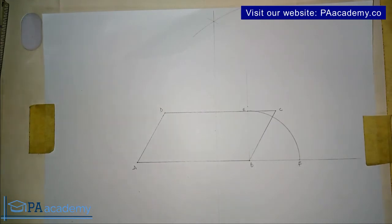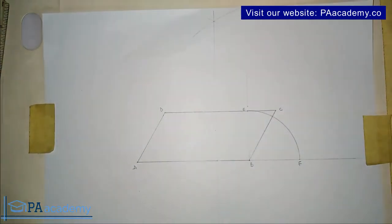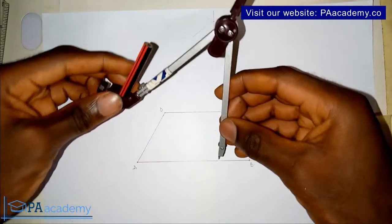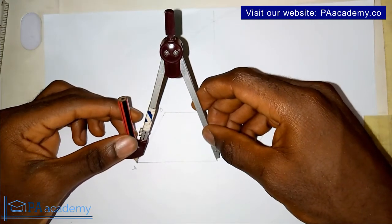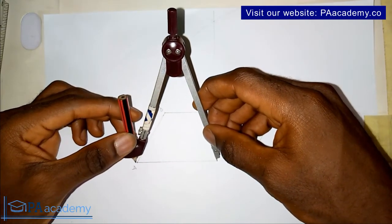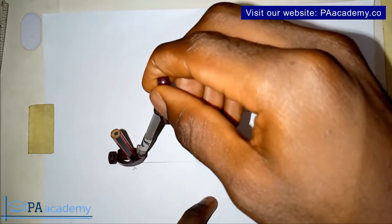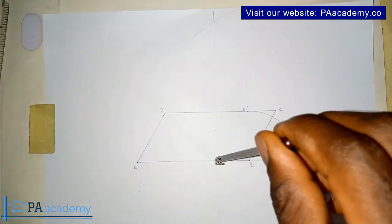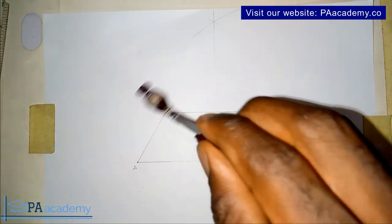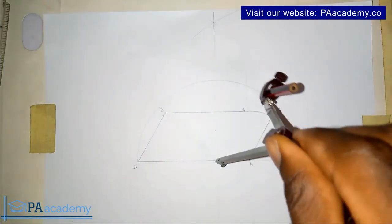This will be the center of the semicircle. Bring in your compass and use it to get the radius of the semicircle. Confirm you are correct, then draw the semicircle.